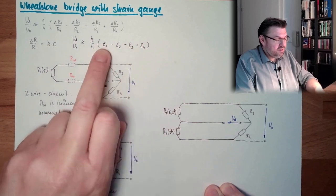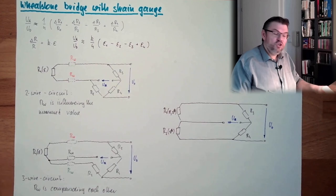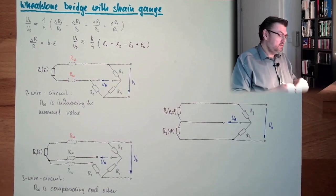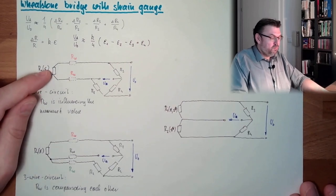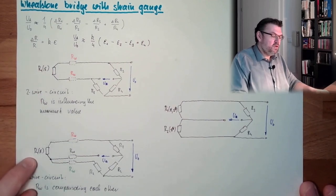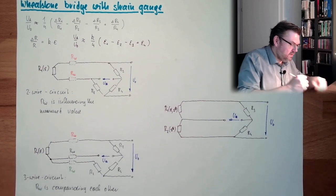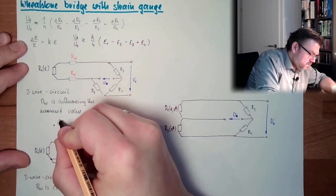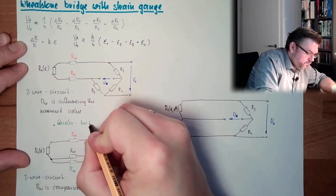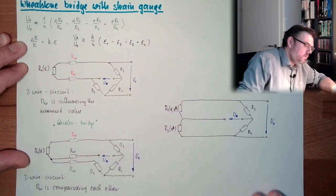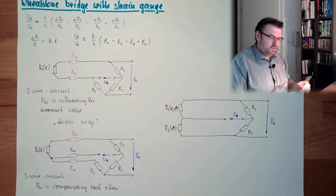And the heat is influencing R2 negatively, so the heat effects compensate each other. This is called a quarter bridge in two-wire connection, or a quarter bridge in three-wire connection. These are quarter bridges. And this is a half bridge.